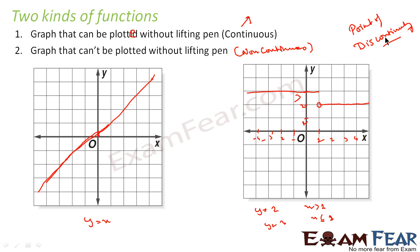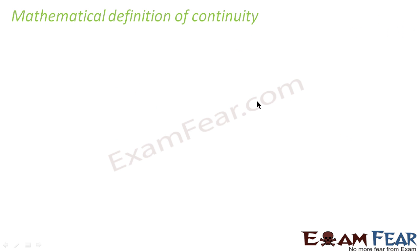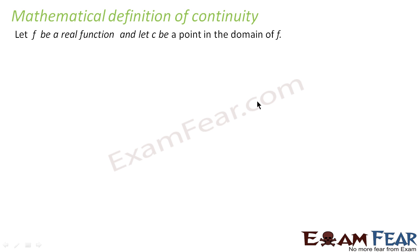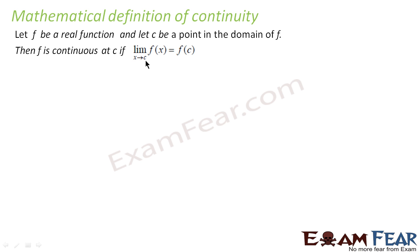Continuous means you can go without lifting the pen; non-continuous means you have to break somewhere. That's the mathematical meaning. Now let's go to the mathematical definition of continuity: let f be a real function and c be a point in the domain of f. Then f is continuous at c if the limit of f(x) as x tends to c is equal to f(c).